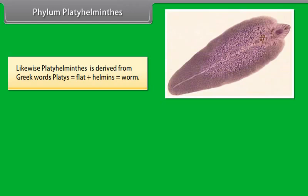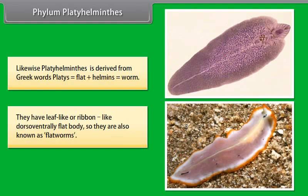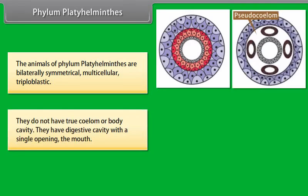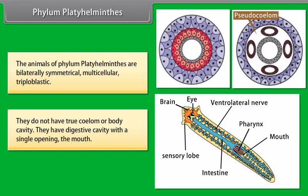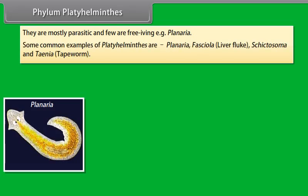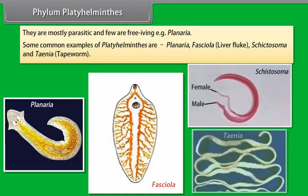Phylum Platyhelminthes. Platyhelminthes is derived from Greek words 'platis' meaning flat, plus 'helminthes' meaning worm. They have leaf-like or ribbon-like, dorso-ventrally flat bodies, so they are also known as flatworms. The animals of Phylum Platyhelminthes are bilaterally symmetrical, multicellular, and triploblastic. They do not have a true coelom or body cavity. They have a digestive cavity with a single opening, the mouth. They are mostly parasitic and few are free-living, e.g. Planaria. Examples include Planaria, Fasciola (liver fluke), Schistosoma, and Taenia (tapeworm).